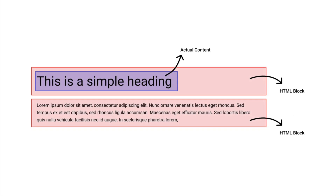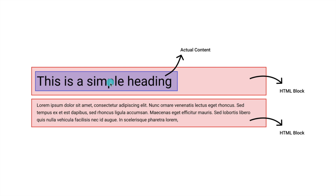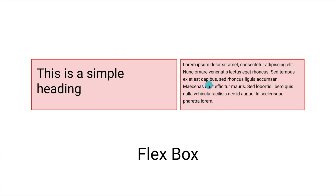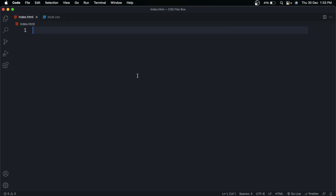In HTML we consider everything as a block. Even though my h1 element is short, covering only the blue part, it has full width — it is considered as a block. The same goes for our p element. The problem is we can't have blocks side by side. But if we want h1 and p elements side by side, for exactly this purpose we have CSS Flexbox — it lets us make HTML block elements appear side by side.